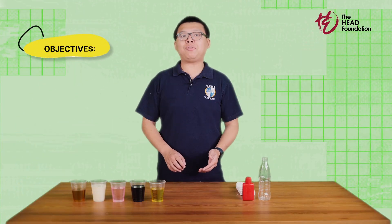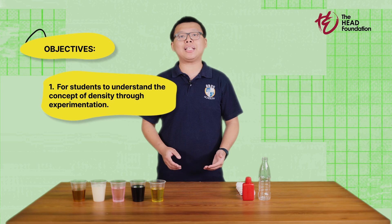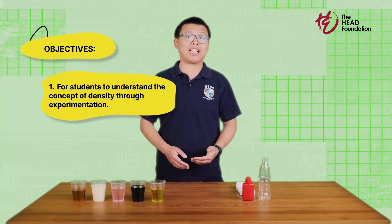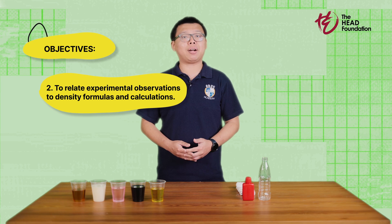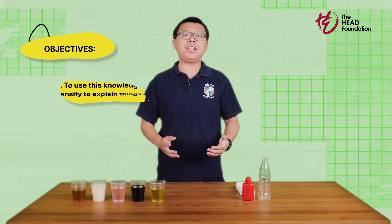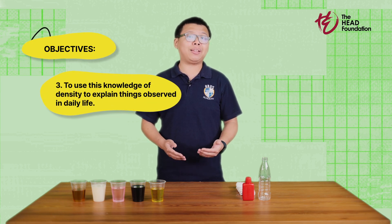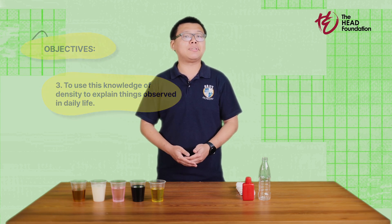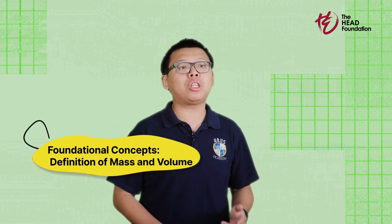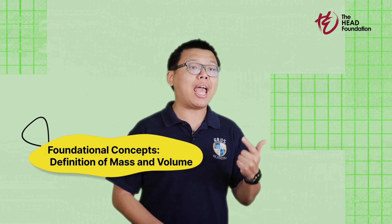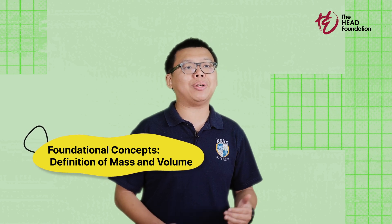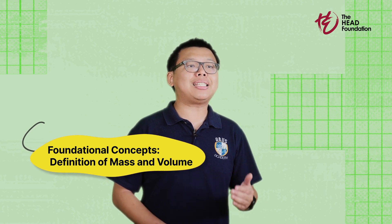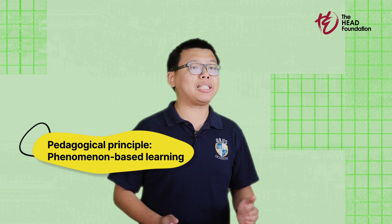The objectives of this lesson are for students to understand the concept of density through experimentation, relate experimental observations to density formulas and calculations, and use their knowledge of density to explain things they see in their daily life. For students to fully understand the lesson, they should come prepared with a good conceptual understanding of mass and volume, as we'll be using these elements in our density calculations.